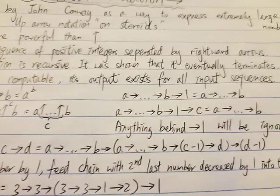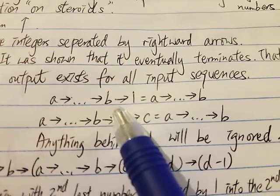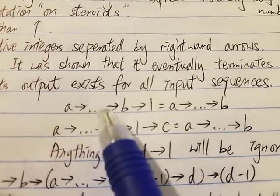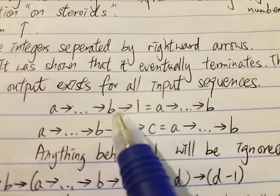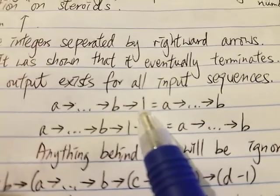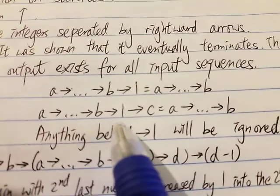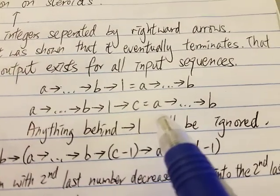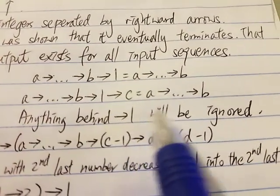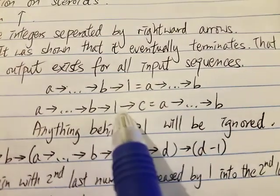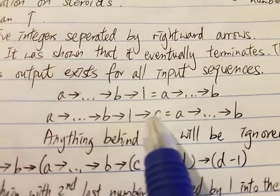Now let's look at a longer chain: A→...→B. If there's an arrow 1 somewhere in the chain, it just means you ignore the 1 and everything behind it. So anything behind an arrow 1 will be ignored — you ignore the 1 and also everything after it, including C.